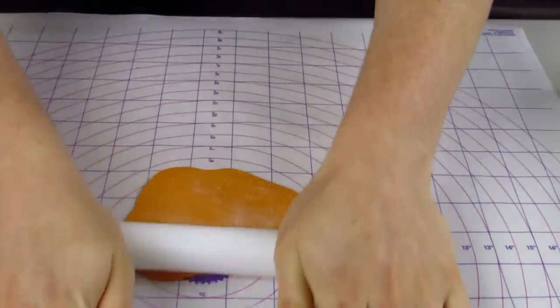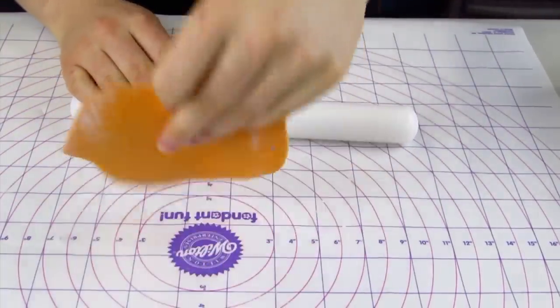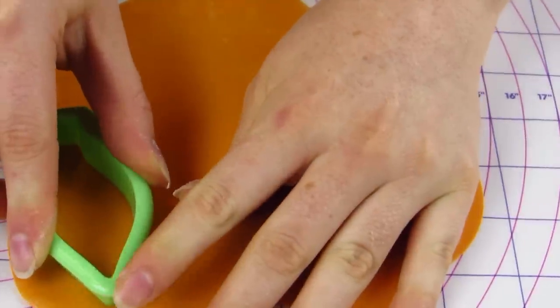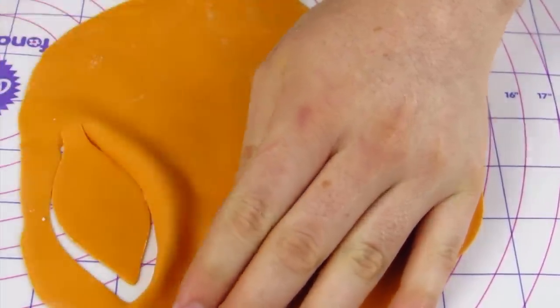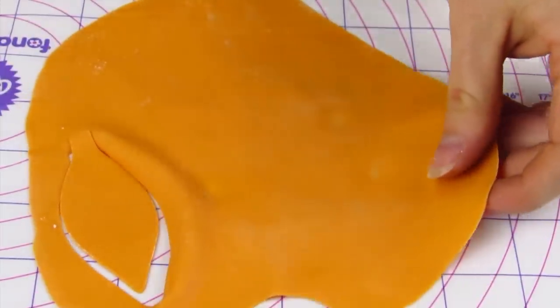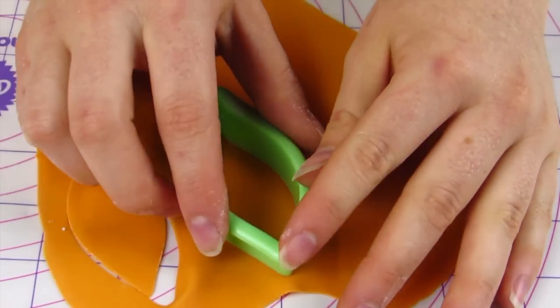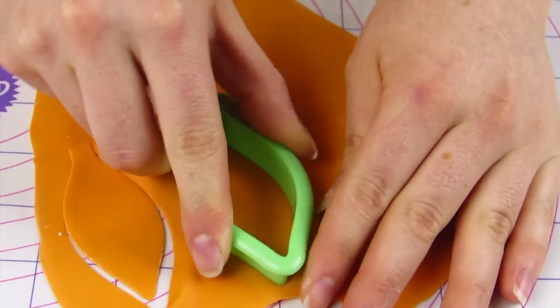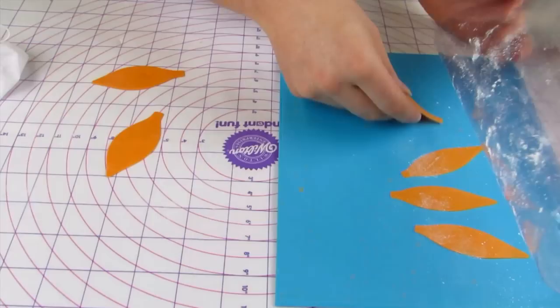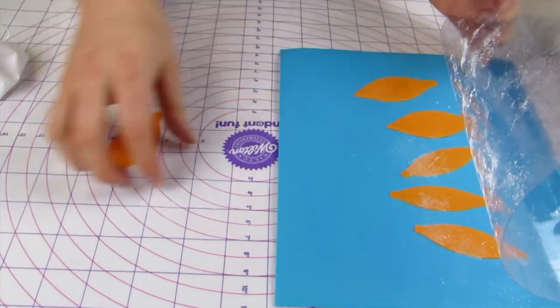Now for the petals I'm going to use some orange gum paste and you want to roll this very very thin. You're going to want to use two different size of petal cutters. And those will come with when you get lily cutters. You'll see that there's a little bit wider one and there's a thinner one. So you're going to need three of each making six total.